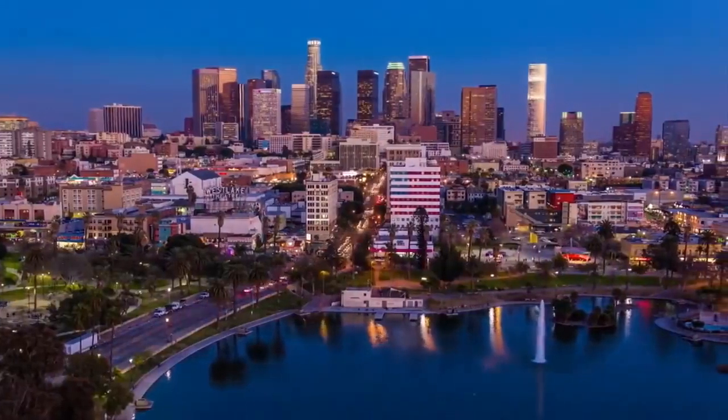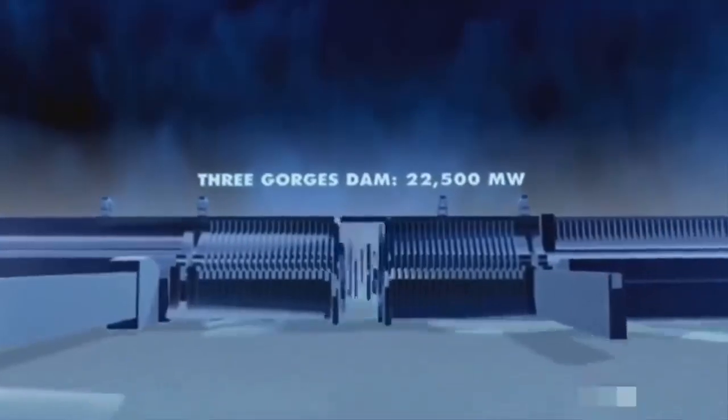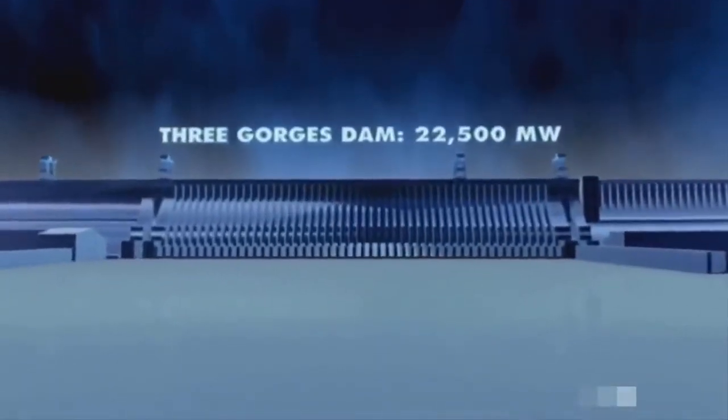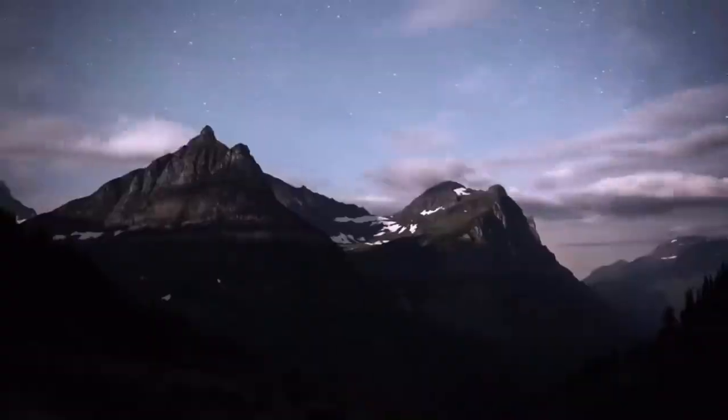The length of the day can also be influenced by man-made structures. For example, NASA scientists calculated that the water stored in the Three Gorges Dam has increased the length of Earth's day by 0.06 microseconds due to the shift in mass.